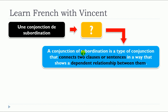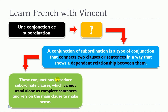A conjunction of subordination is a type of conjunction that connects two clauses or sentences in a way that shows a dependent relationship between them. This concept of dependent relationship is really important. These conjunctions introduce subordinate clauses which cannot stand alone as complete sentences.